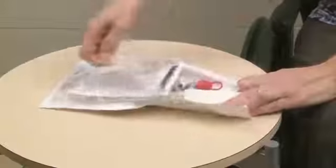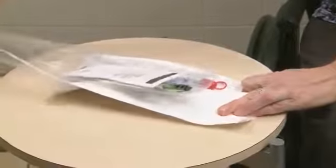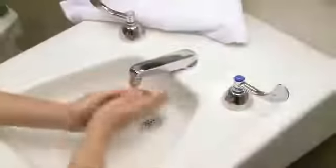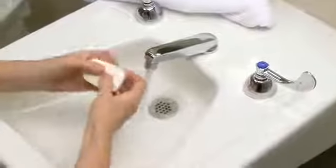Next, peel open the packaging for the Advance Plus Intermittent Catheter System. Now, wash your hands thoroughly with soap and water. Dry your hands with a clean towel.